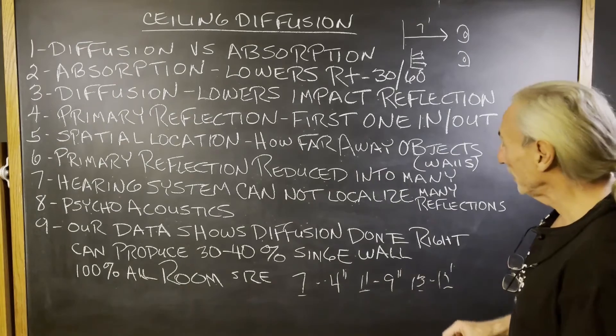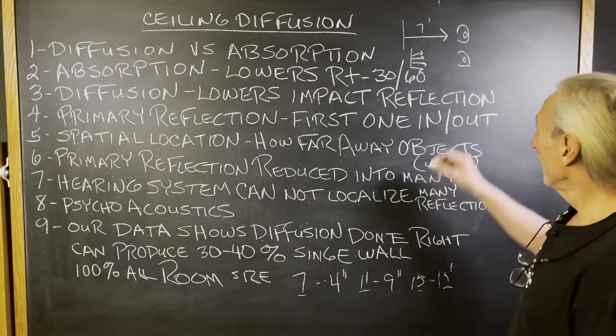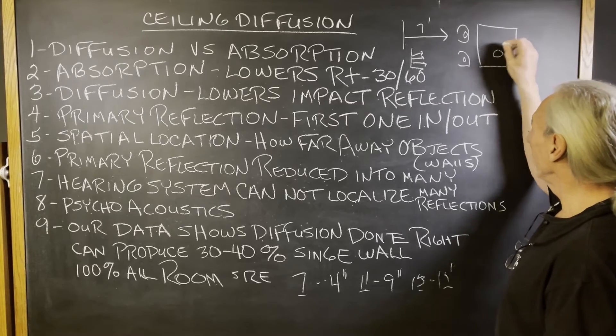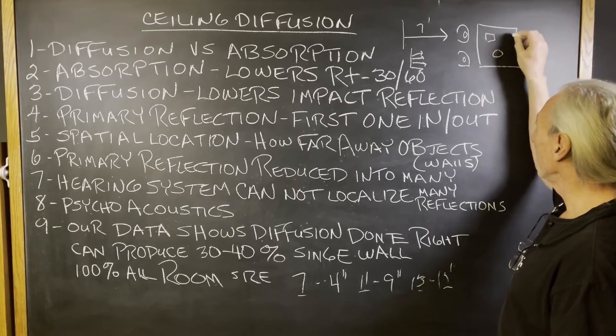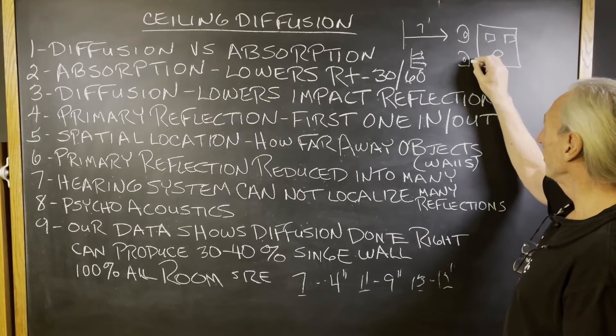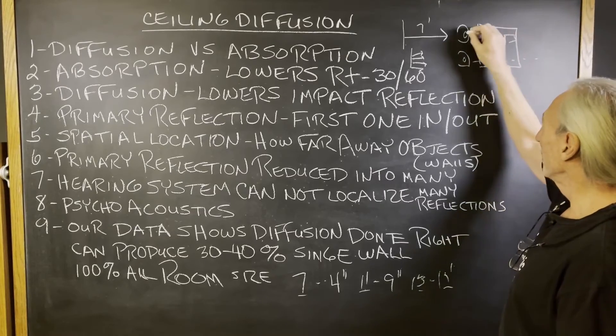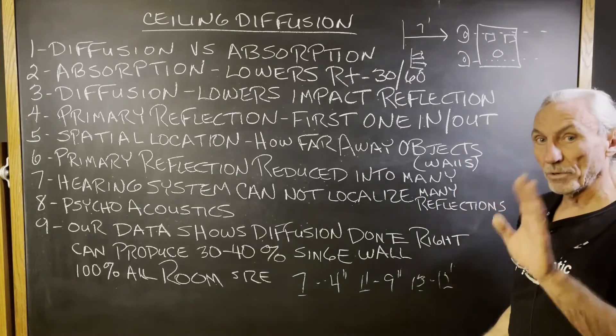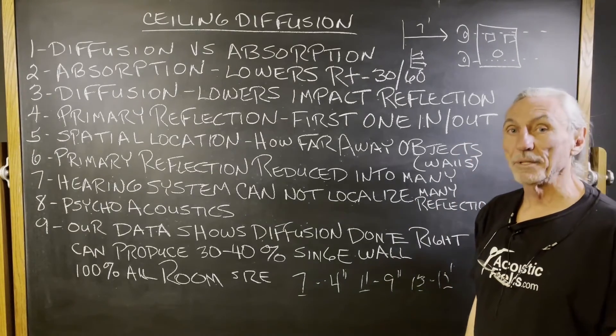You've got to cover enough surface area. So if your chair is here and your speakers are here and you're doing diffusion, your diffusion has to be from behind the speakers to behind the listening position across the ceiling.